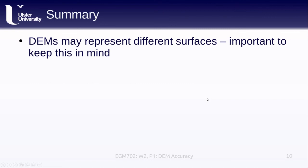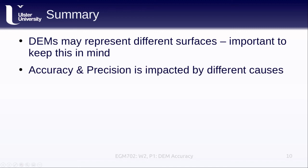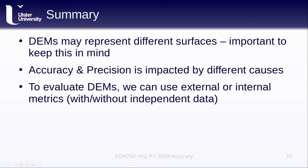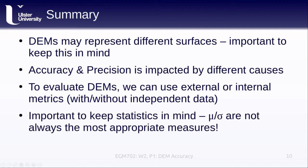To sum all of this up, DEMs might represent different surfaces, and this is important that we keep this in mind. We know that accuracy and precision are both impacted for different reasons that we've discussed in this lecture. To evaluate DEMs, we can use either external or internal metrics, which is to say with or without independent data. And we need to keep statistics in mind, because the mean and standard deviation that we are very familiar with are not always the most appropriate measures to use when we're comparing elevation data.